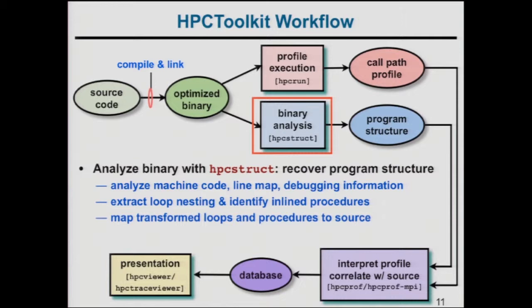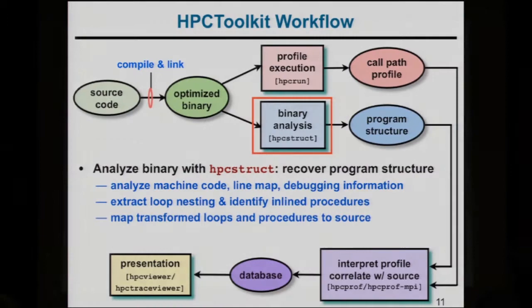The next step is running our HPCStruct tool, which does binary analysis of your executable. We analyze the machine code, parse the machine instructions, rebuild the control flow graph, figure out where loop nests are, identify inline code, and figure out what statements are inside loops. This isn't the source code view — it's how the code actually executes. If the compiler fuses several Fortran 90 statements into a single loop, you'll see that. Then it maps the transformed loops and procedures back to the source code.